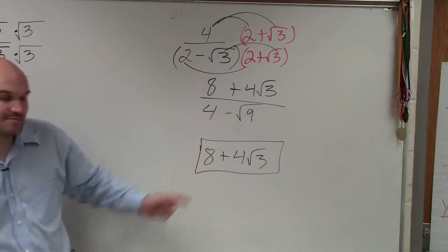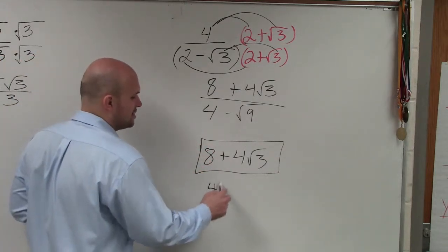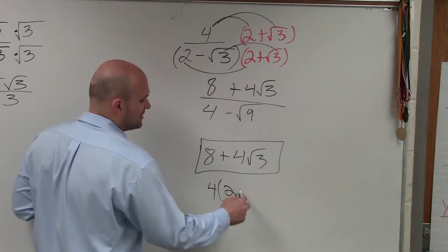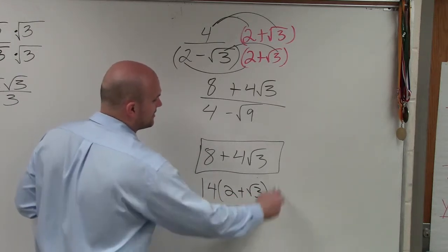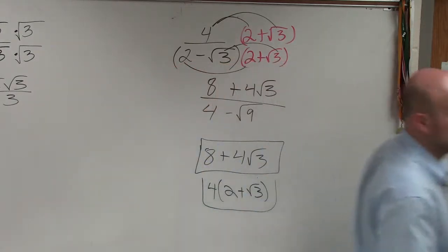On the test, they might factor out a common term, which would be 4, leaving you with 4(2 plus the square root of 3). Both answers are correct. That might be another alternate form you might see.